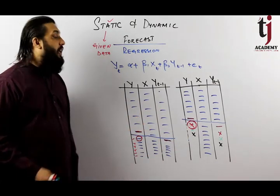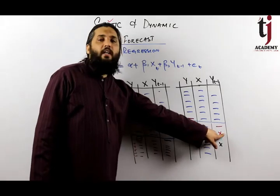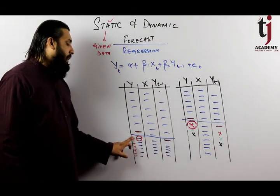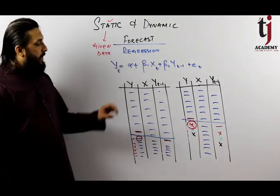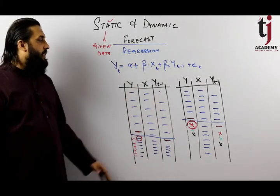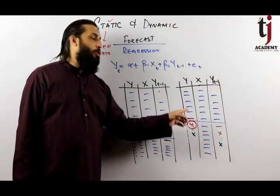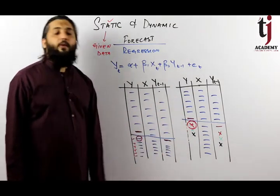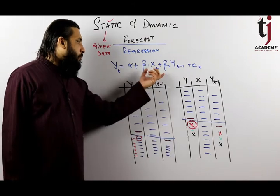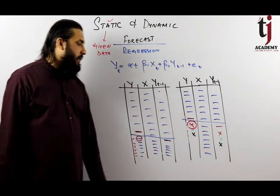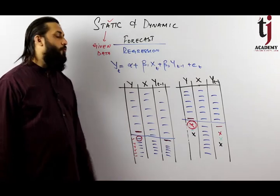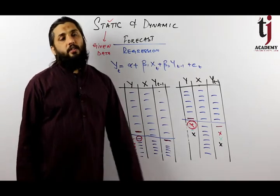After the first value, the subsequent forecasted values will differ. In dynamic forecast, every forecasted value is being used as a lag, whereas in static forecast, the next given value is used — the newly forecasted value has no connection to the next step. So the basic difference: static forecast uses given values to forecast the dependent variable; dynamic forecast uses each forecasted value as the lag value for the next period.